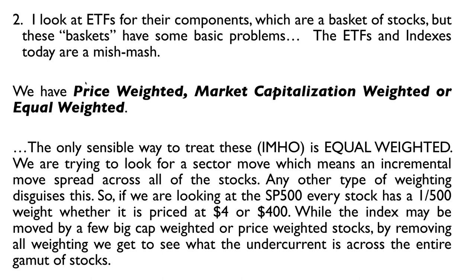We look at ETFs by their components — an ETF is just a basket of stocks, and these baskets have some weighting problems. You can weight by price (price-weighted), by market capitalization (market cap-weighted), or equally weighted. In my opinion, the only sensible way to treat these is equally weighted, since we're trying to look for a sector move — an incremental move spread out across an entire basket of stocks. So for the S&P 500, every stock has a one-five-hundredth weighting whether it's priced at four dollars or four hundred dollars. This allows a more accurate view of what's going on in the entire sector.